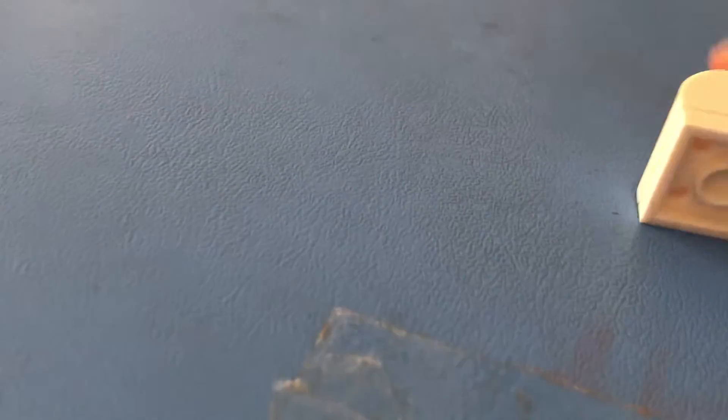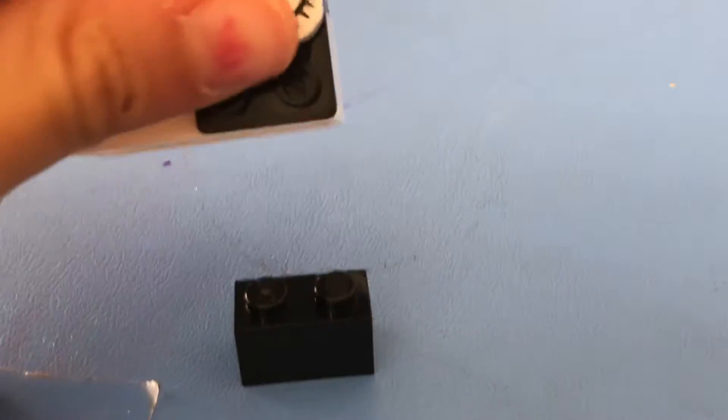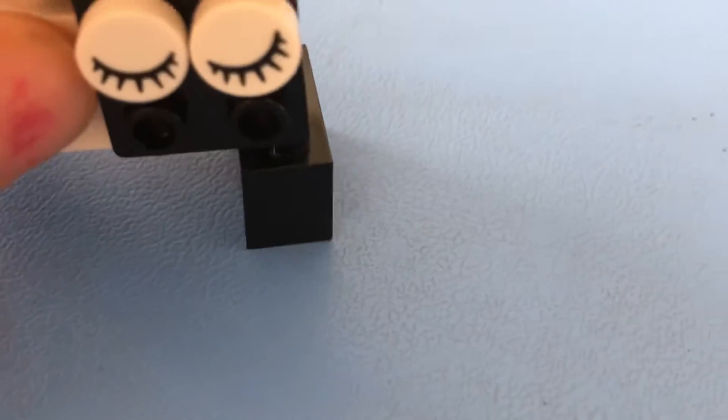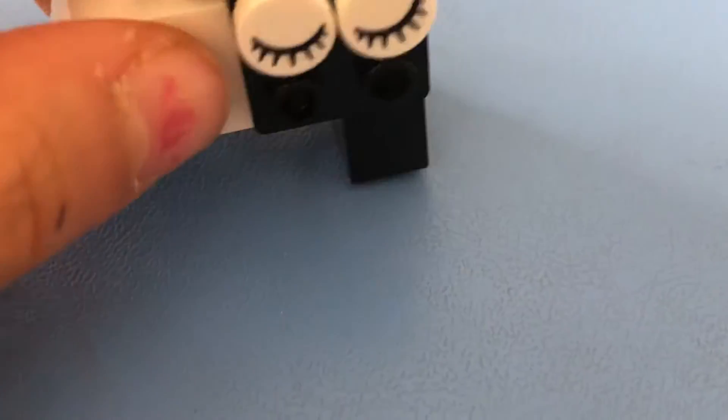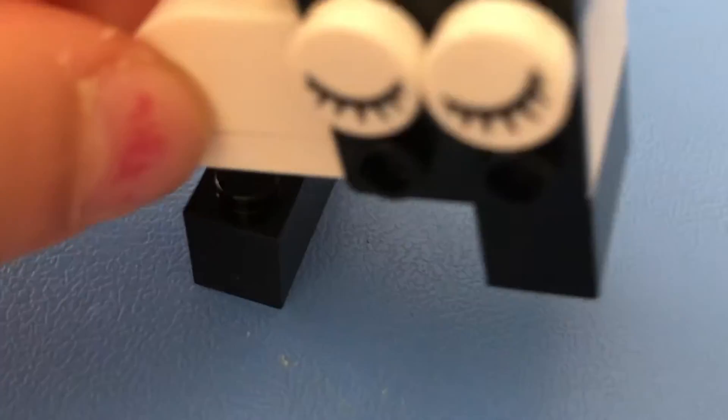Now we need to add the legs. The legs are using these small pieces. This is the first thing. Do that. Good. Second leg. There. And the sheep is finished.